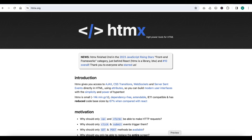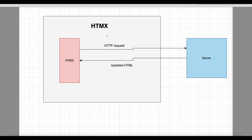Let me show you in the diagram also. Just assume this is our htmx — this is the page HTML with htmx. So after using htmx, our HTML will be able to make direct HTTP requests to the server without the help of any JavaScript framework. Then the server will give updated HTML to the frontend, and that updated HTML can be used inside our main HTML and updated data will be shown to the user directly.